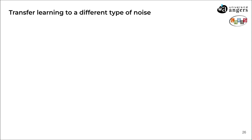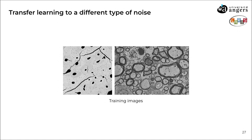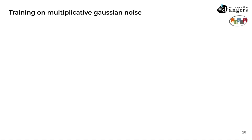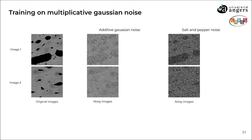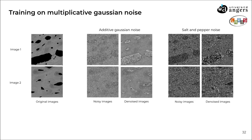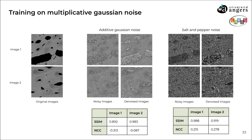In this section, we want to determine whether training the software on one type of noise enables the denoising of images affected by a different type of noise. We first trained the software on images with multiplicative Gaussian noise, then applied this training on images with additive and salt and pepper noise. These are the denoised images that we got. To compare the denoised images with the original images, we calculated the SSIM and the NCC, and these are the results that we found.